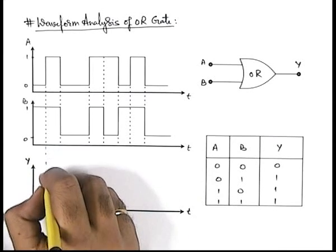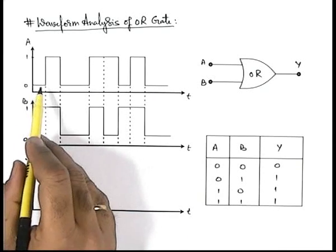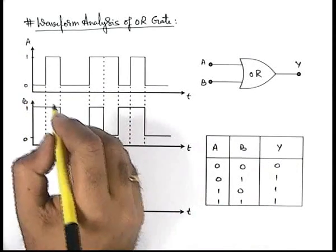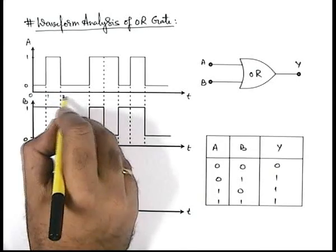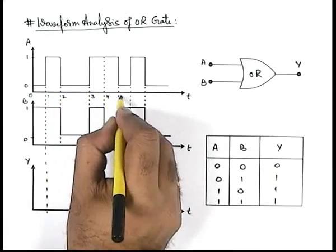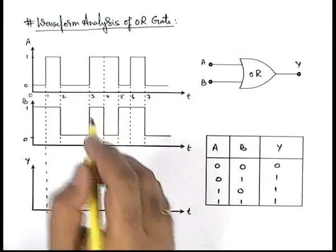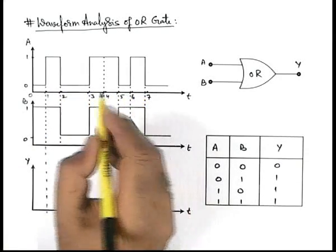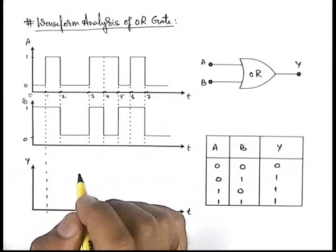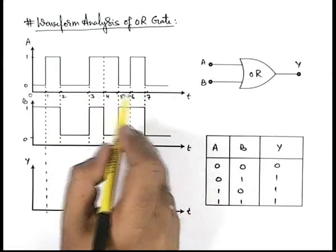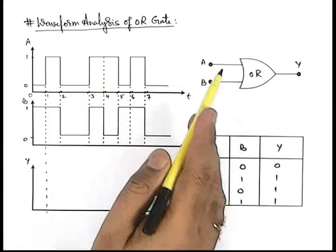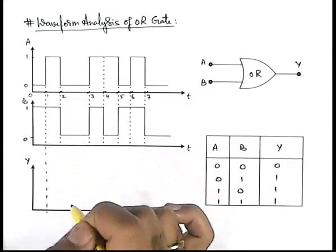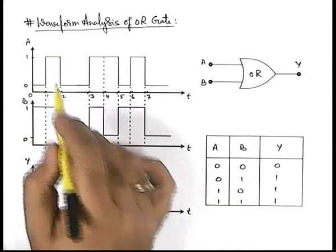Here you can see at any instant between these durations from this time, we can also first write down the timings like this: t equal to zero, this is one, two, three, four, five, six, seven. These are the seven different instants, or you can write this is t1, t2, t3, t4, t5, t6, and t7 at which the signals at terminal A and at terminal B are toggling either from state zero to one or from one to zero again.